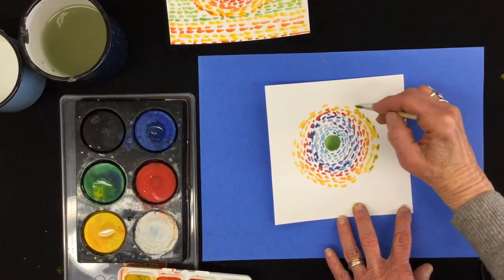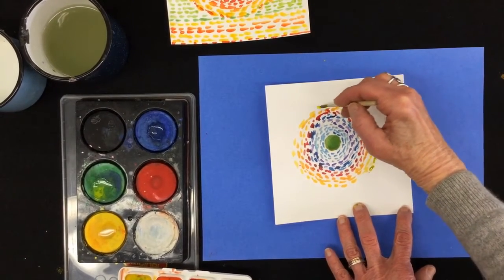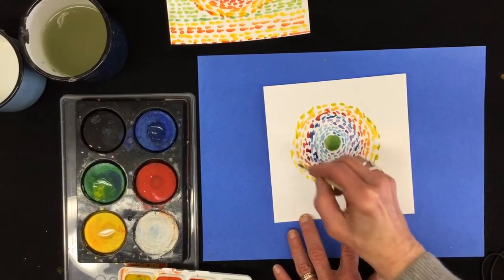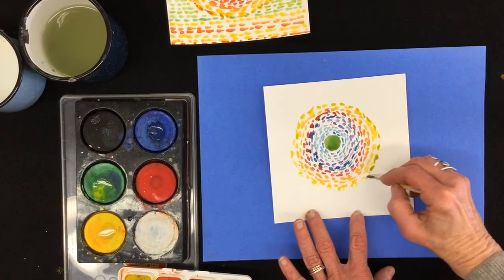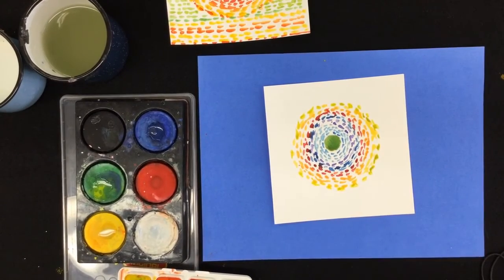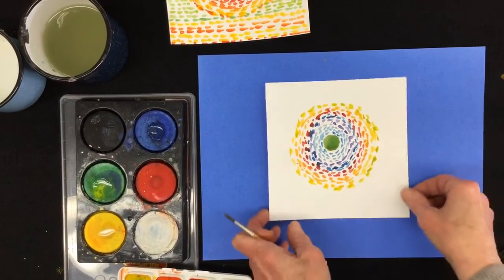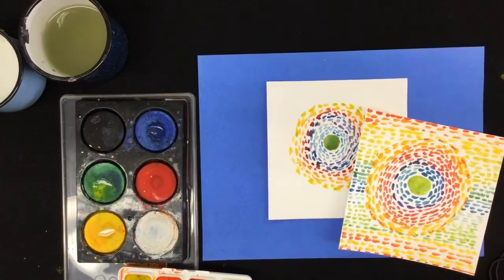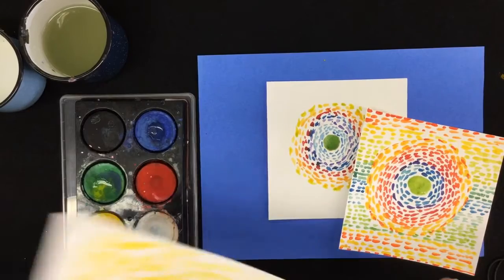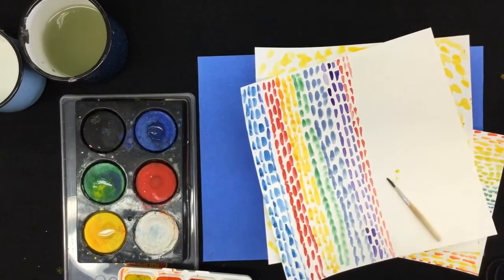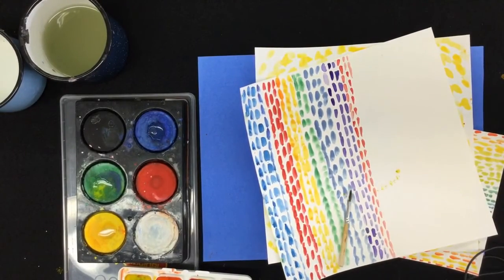Remember, you can do whichever colors you choose. Just make sure you think about doing it in an organized way so we will all know that you understand about the work of Alma Thomas. So stay tuned. Fill in your work all the way to the edges. You might do circulars, you might do straights. But when you're all done, don't forget to take a picture of your work and send it to me. I can't wait to see it.